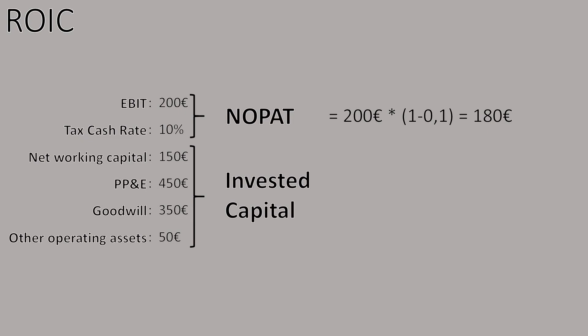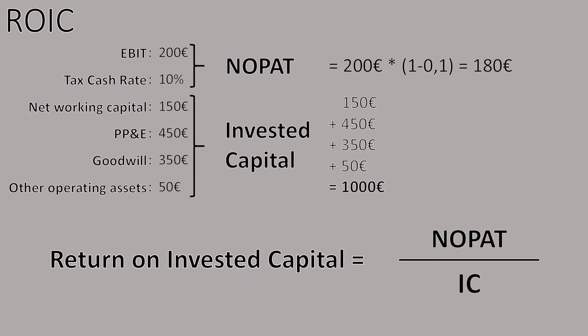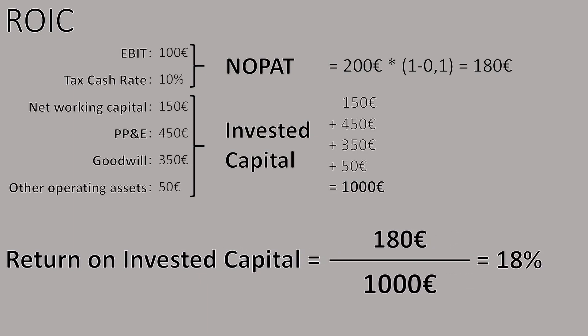In the following step, we calculate the Invested Capital. We simply need to add up all the assets that are needed for the operational business of the company. We assume that all assets listed are needed, so we add them up and arrive at the amount of 1,000 euros for Invested Capital. Now it's time to calculate our return on invested capital. We divide the 180 euros NOPAT by the 1,000 euros Invested Capital and arrive at 18%. An 18% ROIC over a long time horizon is a reliable indicator for barriers to entry and therefore for competitive advantage.